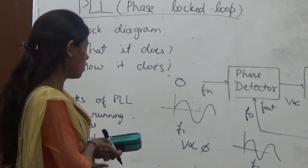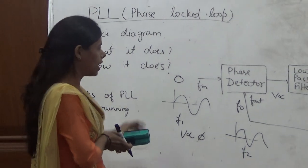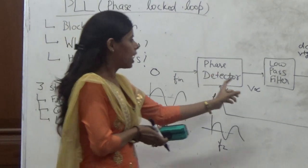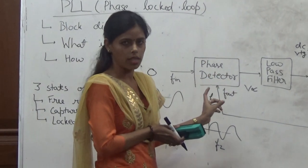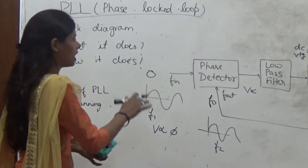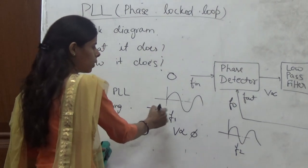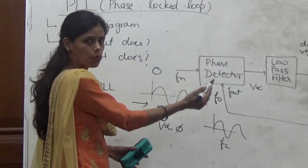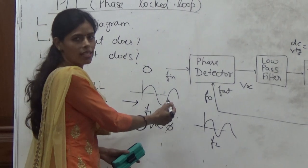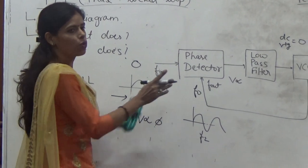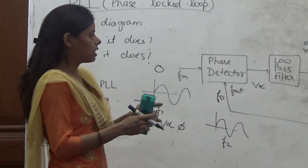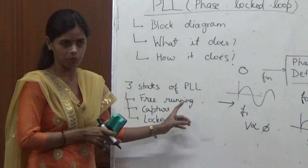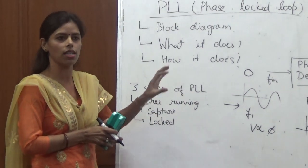The last and most important state is the lock state. In this state, at some point the two frequencies become equal, and that is the lock state. After entering the lock state, if we change the input frequency, the output frequency will actually track the input frequency. That means at that point, input and output frequency will become equal. So this is the function of the PLL — it can synchronize the output frequency with the input frequency, in terms of both frequency and phase difference.